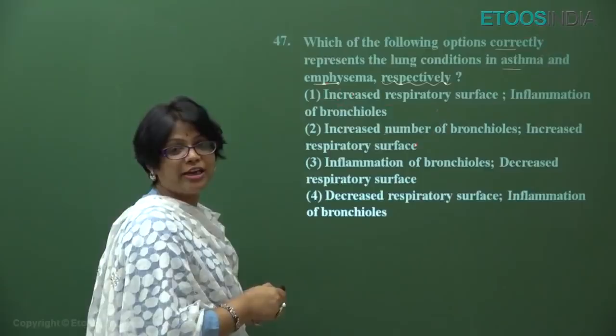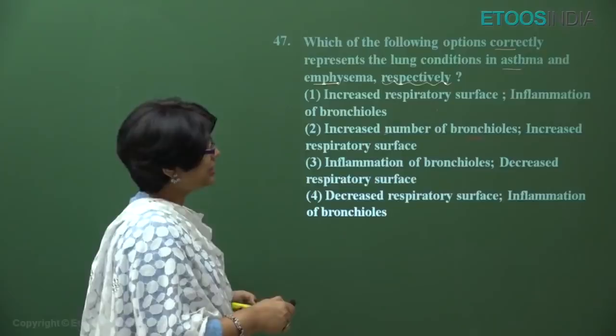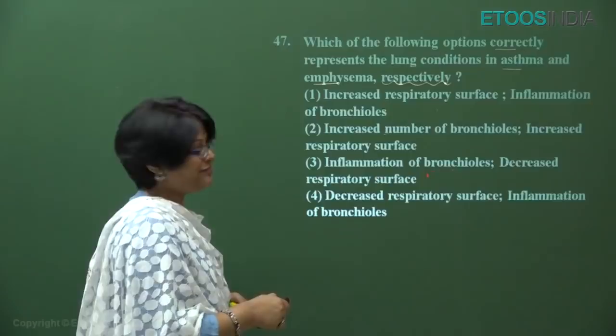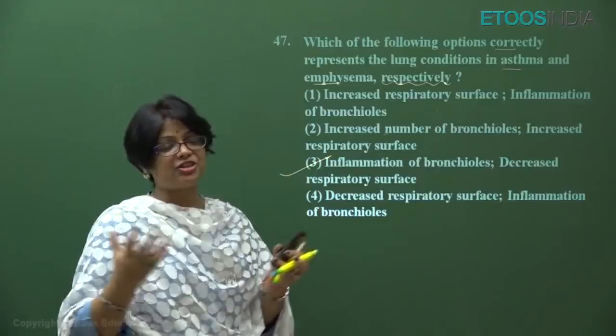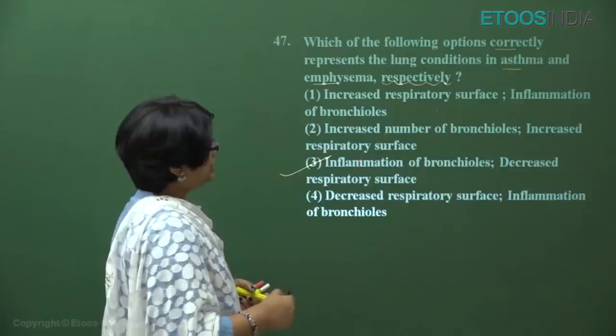Looking at the options: asthma does not involve increased respiratory surface, and emphysema is not inflammation of bronchioles. The correct match is inflammation of bronchioles for asthma and decreased respiratory surface for emphysema, because alveolar walls are collapsed and damaged. This is a direct NCERT question — answer is option number three.